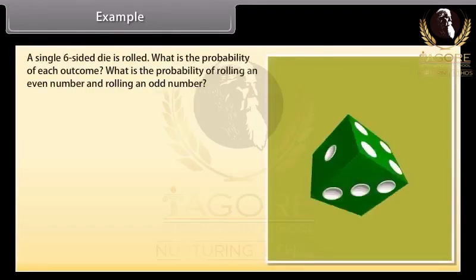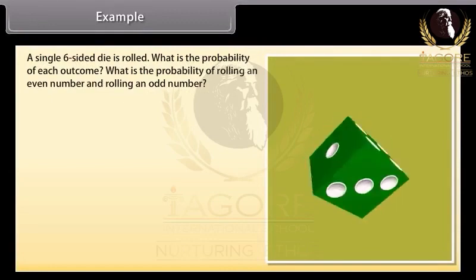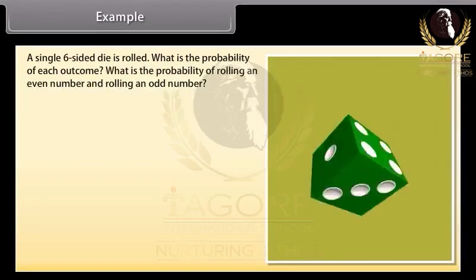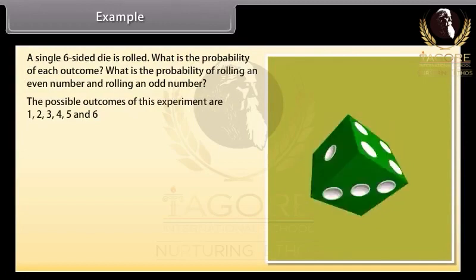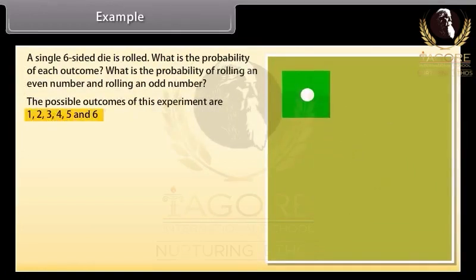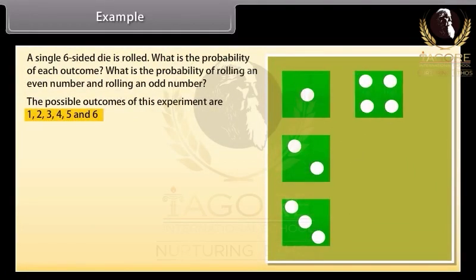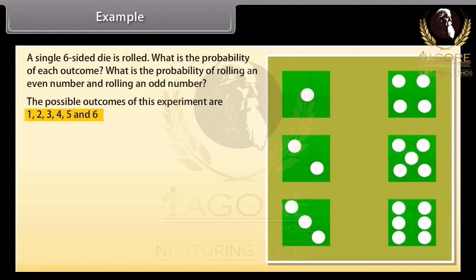A single six-sided dice is rolled. What is the probability of each outcome? What is the probability of rolling an even number and rolling an odd number? The possible outcomes of this experiment are 1, 2, 3, 4, 5 and 6. Now let's find probabilities.